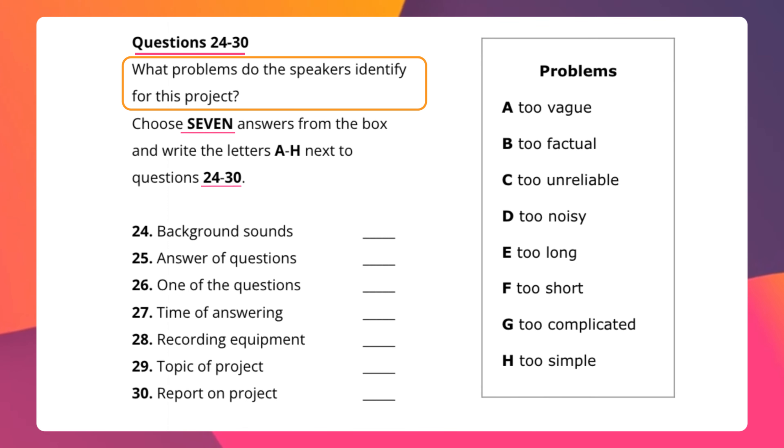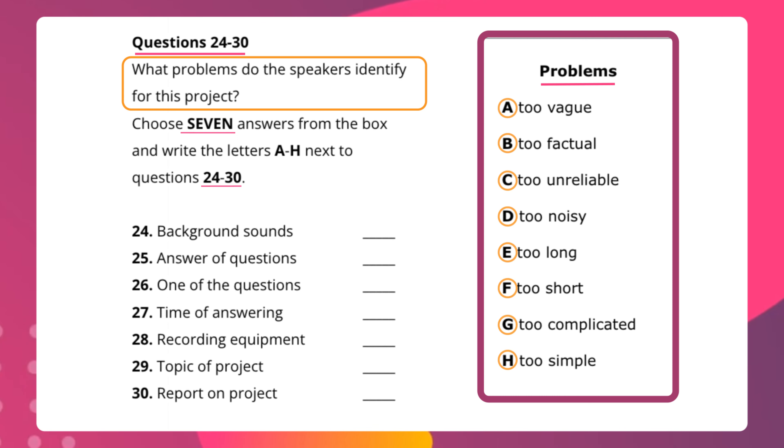If you see there are seven questions from 24 to 30 and on the opposite side, that is on the right hand side, there is a box which talks about problems. The problems are mentioned with the help of the letters A to H. You need to match the questions with the options and this is called as matching information.